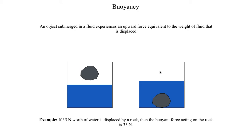This concept of buoyancy is an extension of Newton's third law — for every action there's an equal and opposite reaction. It also stems from the common theme that mother nature does not like disturbances. If you disturb the balance of something, there's going to be some response to bring things back to the way they were. In the case of submerging a rock in water, there's going to be a force that tries to get the rock out of the water.